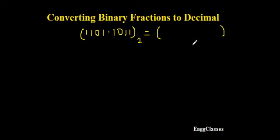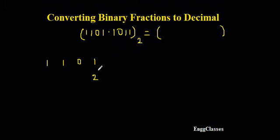To do that, I'll first consider the integer part 1101 and find its decimal equivalent, then handle the fractional part separately. For the integer part, I multiply each digit by increasing powers of two: the rightmost digit by 2⁰, next by 2¹, then by 2², and the leftmost by 2³, continuing if there are more digits.